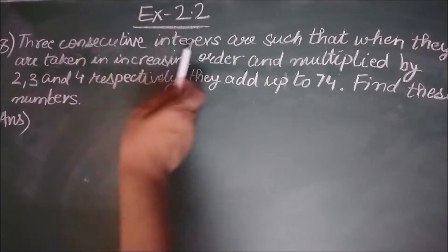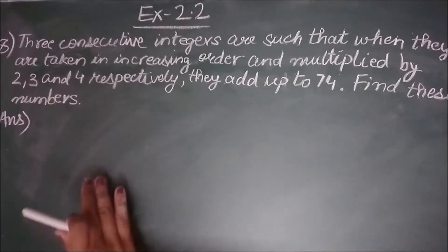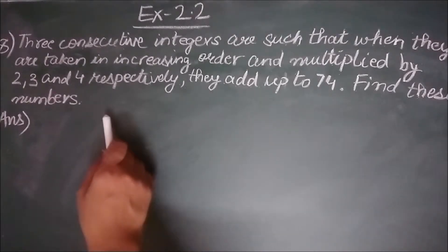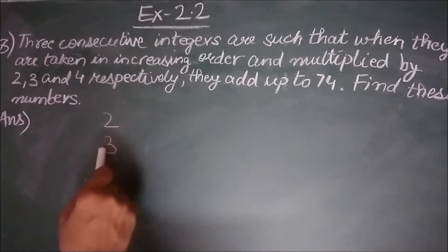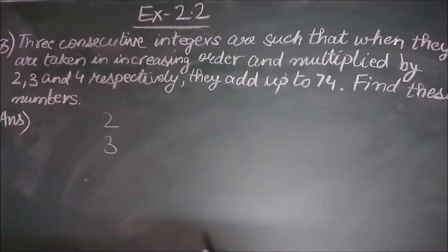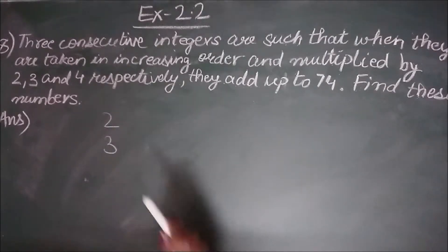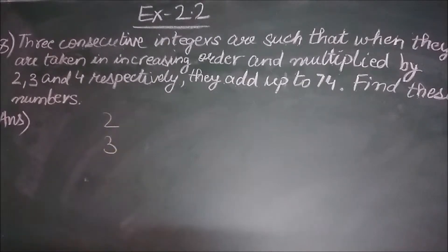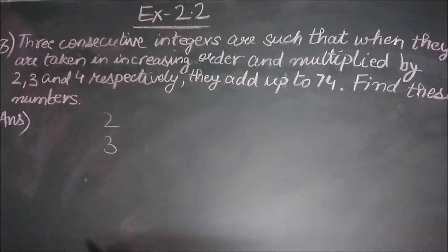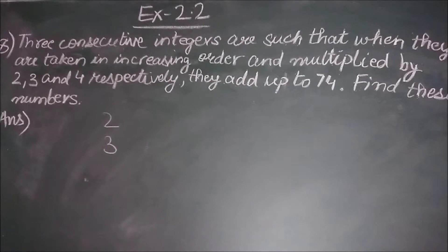So we are talking about three consecutive integers. What are consecutive integers? They are integers which come one after the other. For example, 2 and 3 are consecutive integers because 3 comes immediately after 2. There is no integer that comes between 2 and 3.